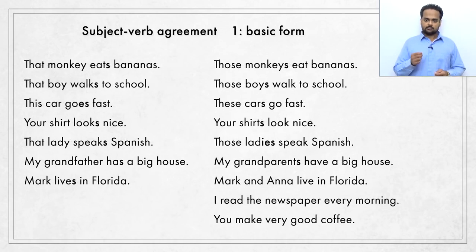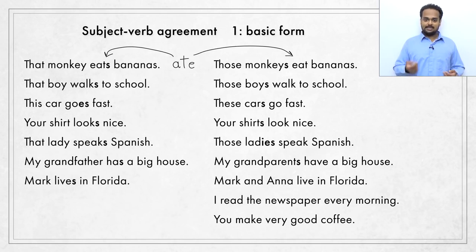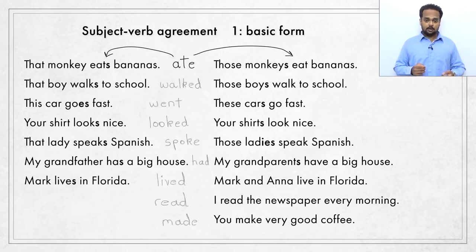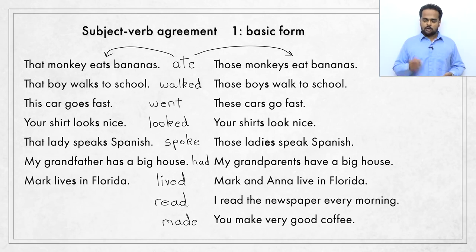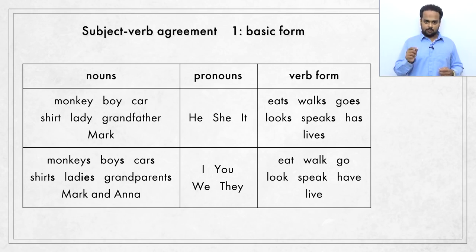I want to point out that subject-verb agreement rules only apply to the present tense. In the past tense, subject-verb agreement isn't a problem because there's only one past tense verb form. The past tense of eat is ate, so we say 'that monkey ate bananas' and 'those monkeys ate bananas' — it's the same for both singular and plural subjects. Similarly, 'that boy walked to school' and 'those boys walked to school.' So the basic subject-verb agreement rule only applies in the present tense.